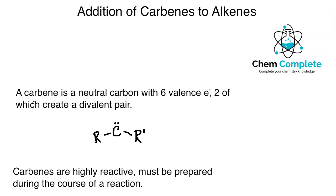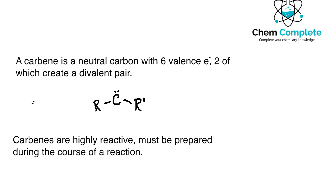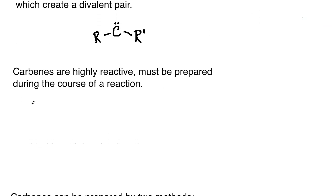Carbenes must be prepared during the reaction itself because they are highly reactive in nature. The six valence electrons and the pair there is not a normal state for carbon. It's very much a Lewis acid that is looking for electrons to be donated, which is where the alkene is going to come in. Carbenes need to be prepared during the reaction itself due to how reactive they are, so we are going to have to prepare them previously to their reaction with the alkene.